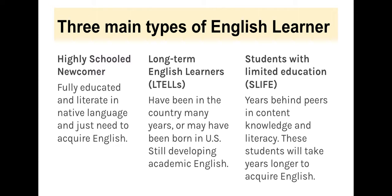Another important distinction to make is with regards to the diversity among students designated with the English learner or multilingual learner label. The three largest subgroups of learners are highly schooled newcomers, students sometimes referred to as long-term English learners, and students with limited formal education. Students who are also identified as English learners and receiving special education services are yet another group. It is important to stress that while these categories and labels serve a purpose, each student's language learning journey is complex and unique, making it important to get to know and understand them on an individual basis.